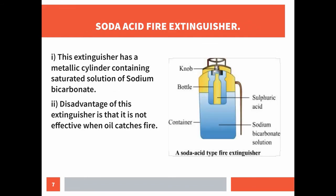Next is the soda-acid fire extinguisher. These extinguishers have a metallic cylinder containing a saturated solution of sodium bicarbonate. A glass bottle containing concentrated sulfuric acid is tied to the cap of the cylinder. When the knob is struck, the acid bottle breaks, the sodium bicarbonate solution comes into contact with the concentrated sulfuric acid, and this produces carbon dioxide. Since carbon dioxide is heavier than air, it forms a blanket over the burning surface, cuts off the contact of air, and stops the fire.